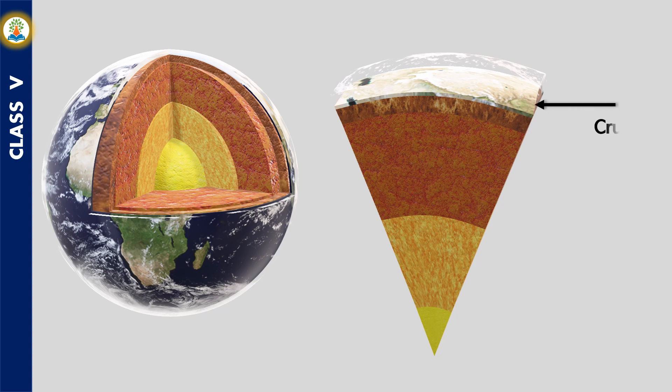Crust is the outermost layer of the Earth which is made up of solid rocks, soil and sand. We live on this layer.